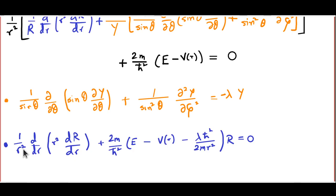Notice that the angular equation is completely independent of the potential energy, as long as the potential energy depends on r alone — that is, as long as we are talking of a central potential. In a sense, the angular equation is really more important than the radial one, because it is applicable to a vastly larger number of examples. In fact, you have already met this equation before, not in quantum mechanics at all — you have met it in electrostatics, because the angular part of the Laplacian also appears when you solve the Laplace equation in spherical polar coordinates.